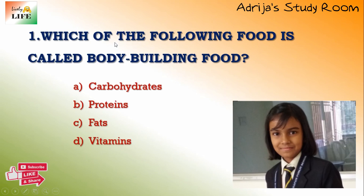The first question: which of the following food is called bodybuilding food? We have to find which nutrient is called bodybuilding food. Carbohydrates give us energy, so they are called energy-giving food. Proteins are called bodybuilding food — they help us to grow. Fats also give us energy, so they are also called energy-giving food. Vitamins protect us from diseases, so they are called protective food. Therefore, proteins is the bodybuilding food — the answer is B.